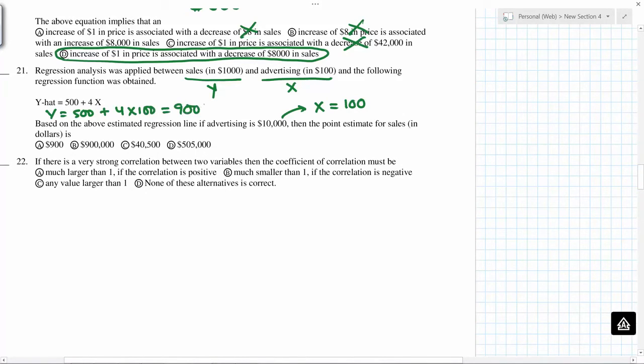But this is in thousands, so this 900 means 900,000.